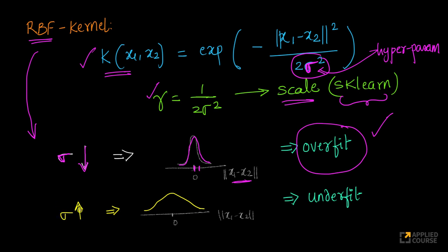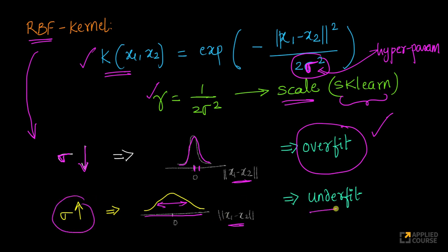As sigma increases, farther and farther points — because the width of the kernel is greater — will also be treated as being similar. So if sigma is larger, you will underfit the model. If sigma is smaller, you will overfit the model.